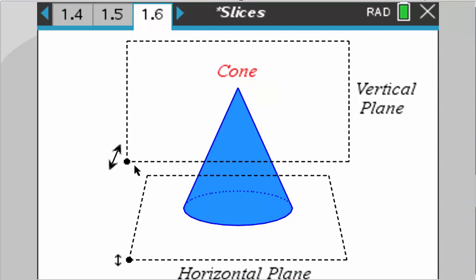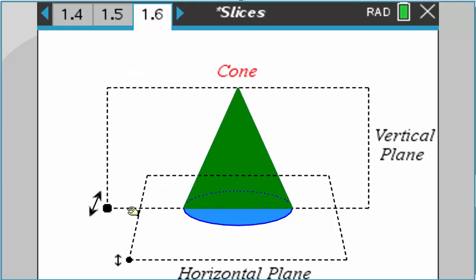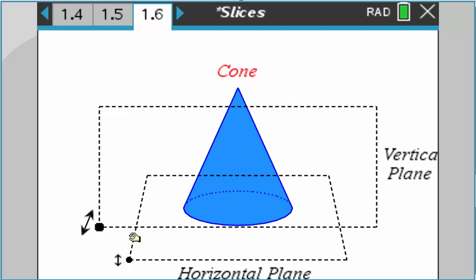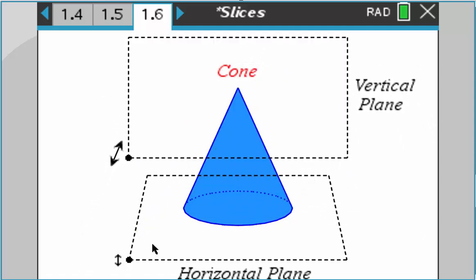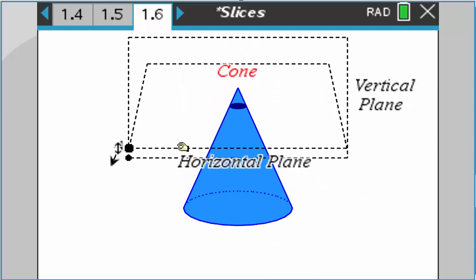Cone. Here comes the vertical plane. You can see it's a parabola, then becomes a triangle right in the middle, and then back to a parabola. The horizontal plane is the circle getting smaller until at the top it becomes just a vertex.